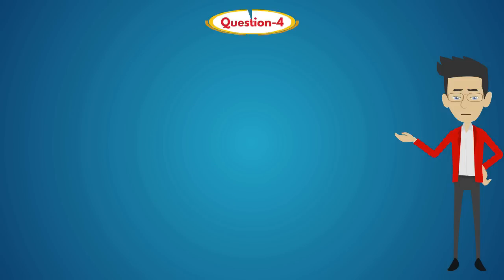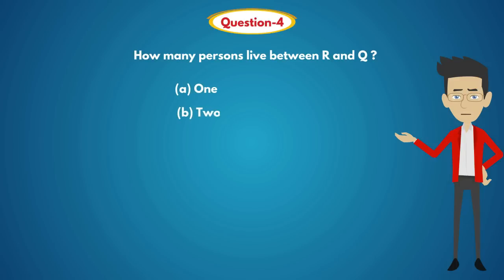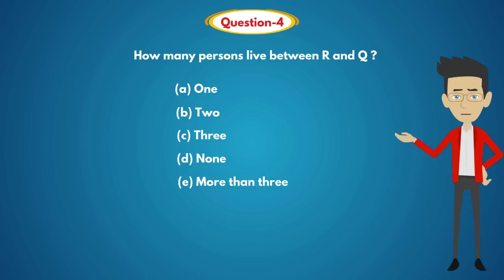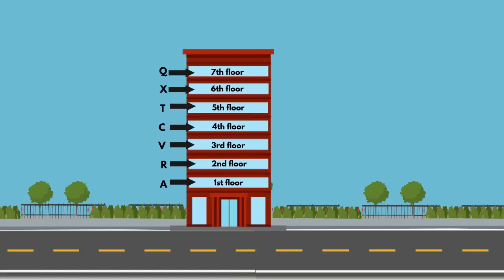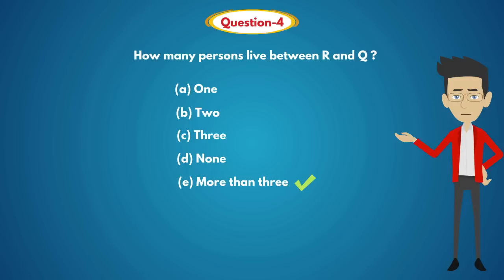Question 4: How many persons live between R and Q? Options: A) 1, B) 2, C) 3, D) None, E) More than 3. Solution: R lives on the 2nd floor and Q lives on the 7th floor. Between R and Q there are 4 floors. So the answer is Option E: More than 3.